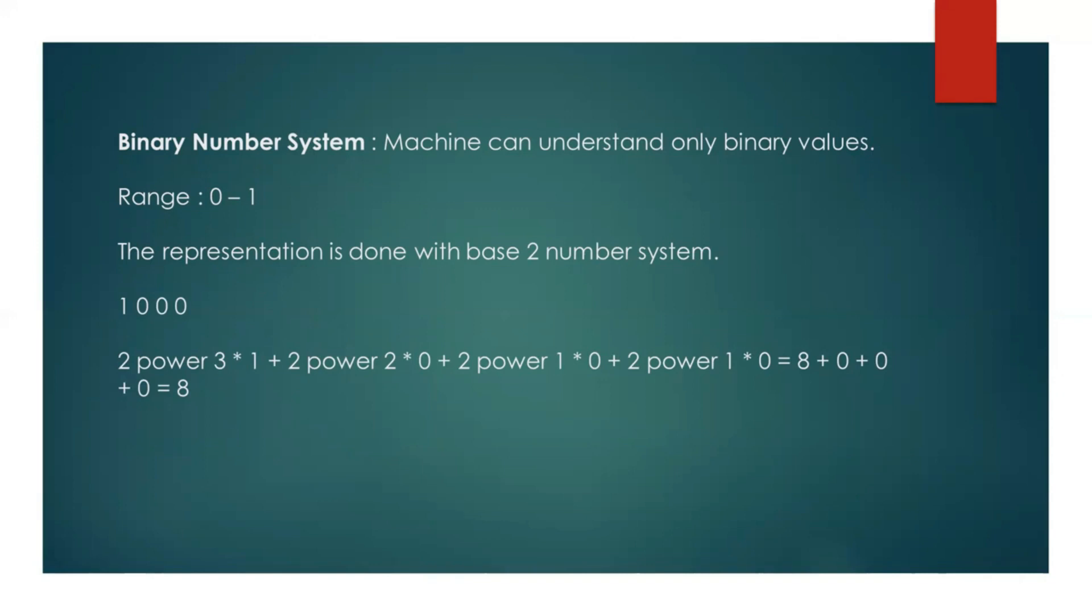For a number of 1000, we will have 2 power 3 times 1 plus 2 power 2 times 0 plus 2 power 1 times 0 plus 2 power 0 times 0 is equal to 8. 8 plus 0 plus 0 plus 0 is equal to 8. This is how we will be representing the 8 in the 4-bit binary system.